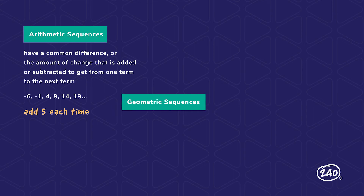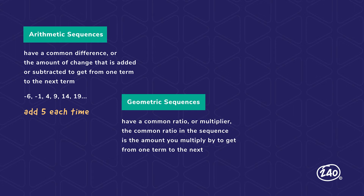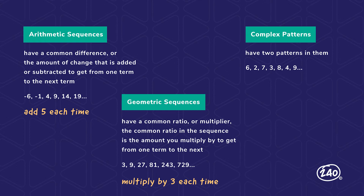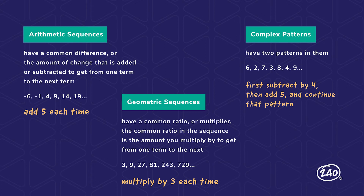Then you've got geometric sequences — a little trickier. In these, you multiply or divide by the same number to go from one term to the next. In this example, you multiply by three each time. Then you've got complex patterns — the trickiest. In a complex pattern, you identify two separate patterns. Looking at the sequence 6, 2, 7, 3, 8, and so on: to go from 6 to 2, subtract 4; then to go up to 7, add 5. You go back and forth — subtract four, add five, and so on.